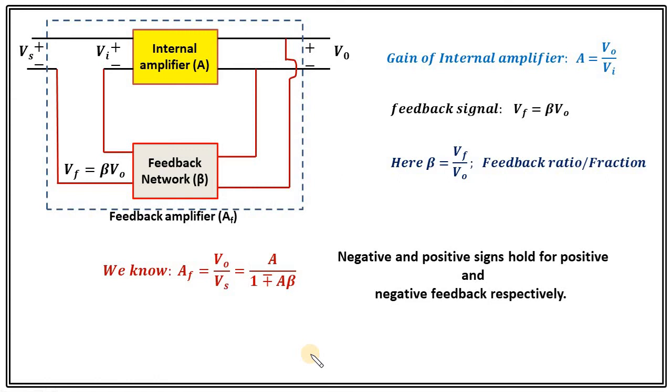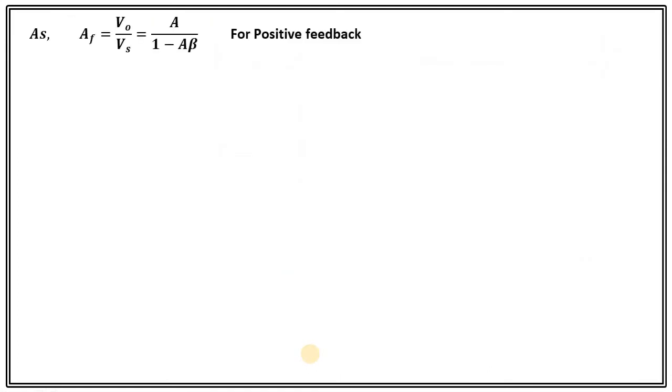Negative sign is for the positive feedback and positive sign is for the negative feedback as we are interested in the positive feedback amplifier. So we will take the negative sign and AF will be equals to A upon 1 minus A beta. So look at this expression very closely.